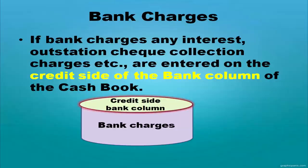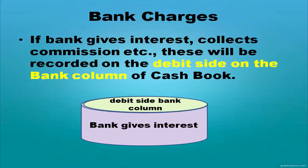Bank charges: if the bank charges any interest such as outstation check collection charges, these are entered on the credit side of the bank column of the cash book. If the bank gives interest or collects commission, these are recorded on the debit side of the bank column.